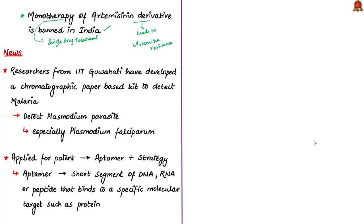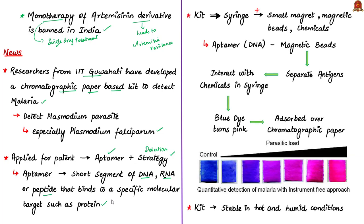A group of researchers from IIT Guwahati have developed a simple detection method for malaria. This method uses an instrument in the lab or a piece of chromatographic paper when in the field. The kit can detect the Plasmodium parasite and specifically detect Plasmodium falciparum, which is commonly found in India. The team has applied for patents for one aptamer and the detection strategy used. An aptamer is a short segment of DNA, RNA or peptide that binds to a specific molecular target such as a protein. In this research, DNA aptamers were used.